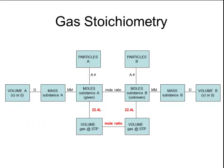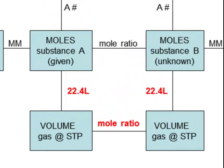Remember that standard temperature is 0 degrees Celsius, or 273 Kelvin, and standard pressure is 1 atmosphere. One mole of any gas at standard temperature and pressure has a volume of 22.4 liters. Then we can use those simple whole number ratios found in the balanced chemical equation to make comparisons between volumes of gases.